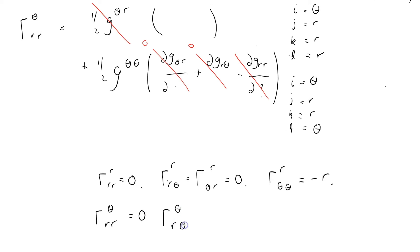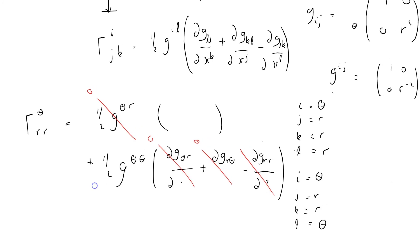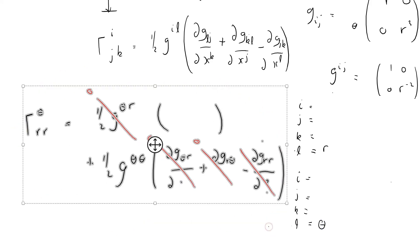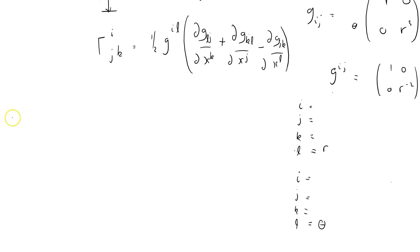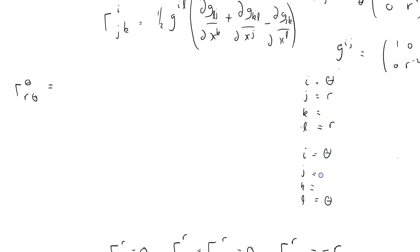Next is Γ^θ_rθ. Here i equals theta, j equals r, k equals theta. With l equals r: g^θr is off-diagonal, zero. With l equals theta: one-half g^θθ times ∂g_θθ/∂x^k — k is theta, so that's zero. Then ∂g_θθ/∂x^j where j equals r — that might make a difference.